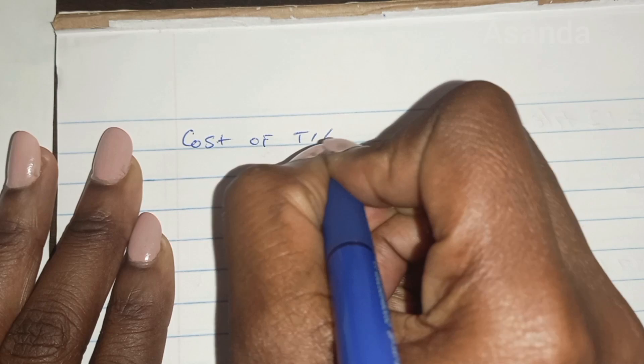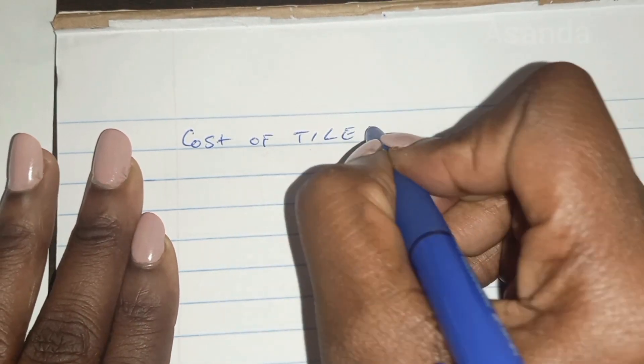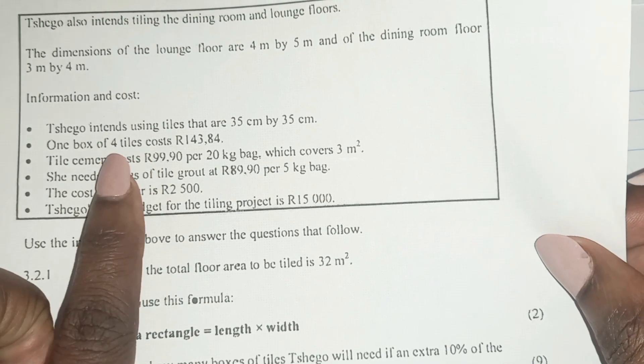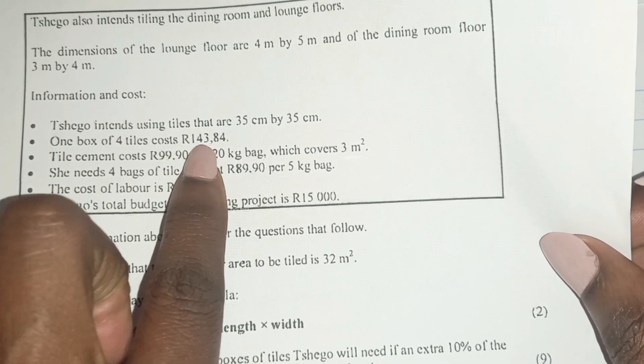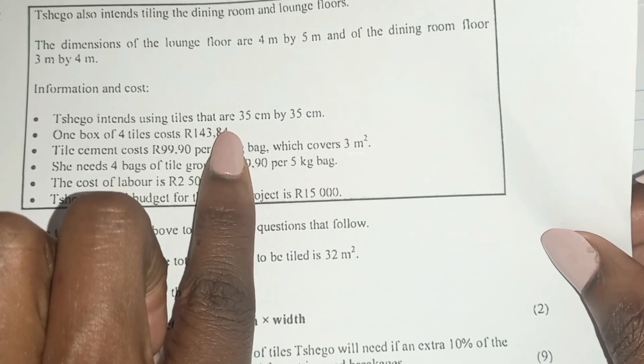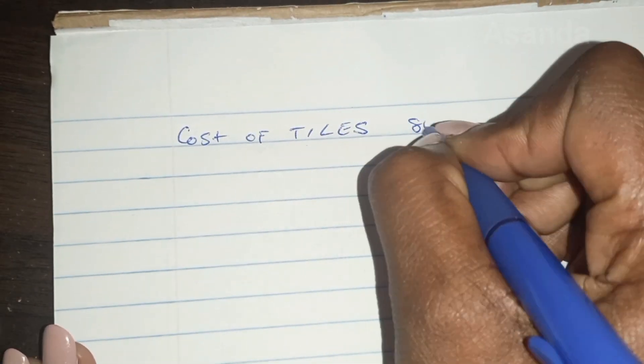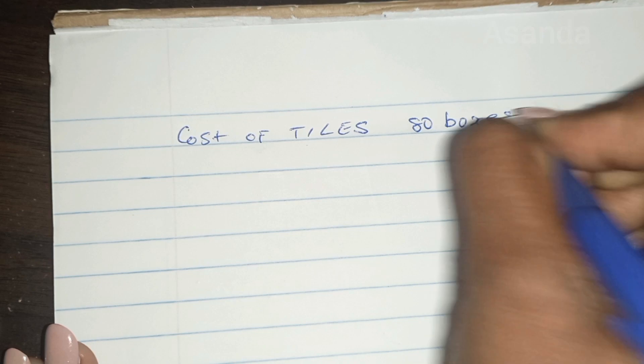So let's start the cost of tiles. So that is buying the tiles. That is going to be, we have it here. They said one box is 143.84. And he's buying 80 boxes. Remember we said 80 boxes in the previous question.